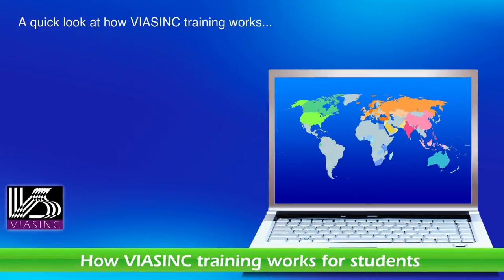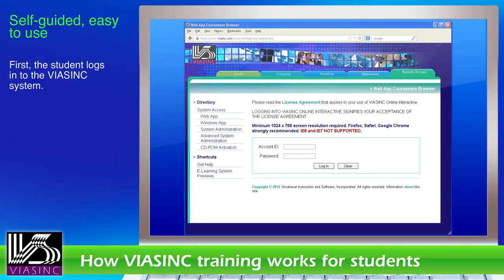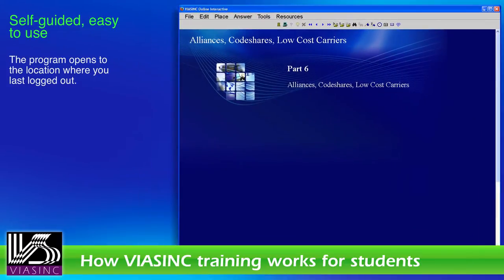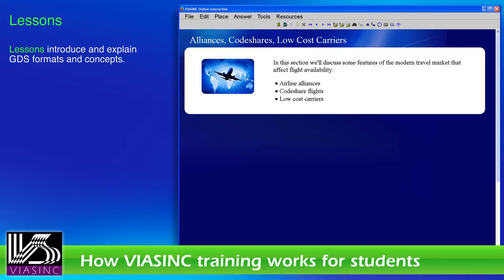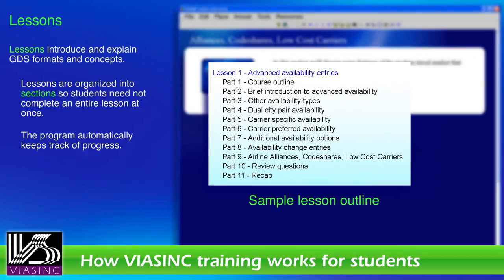Let's take a quick look at how Viasync training works. First, the student logs in to the Viasync system. The program opens to the location where you last logged out. Training is self-explanatory — just click the Next button on the toolbar to advance. Lessons introduce and explain GDS formats and concepts, and are organized into sections. The program automatically keeps track of progress.